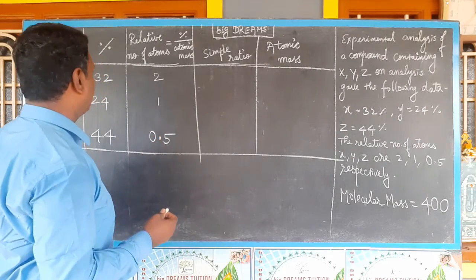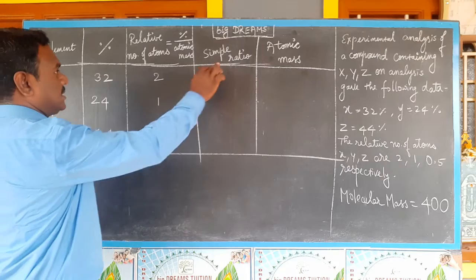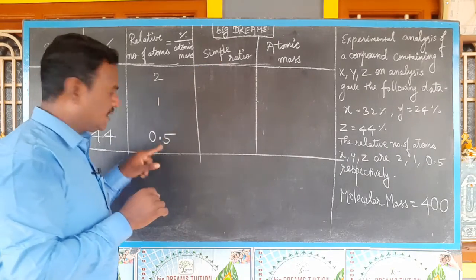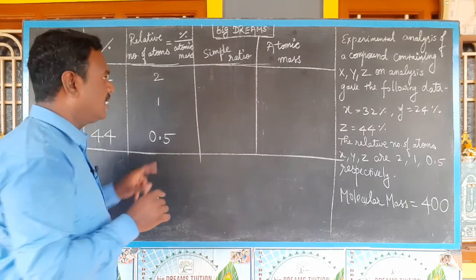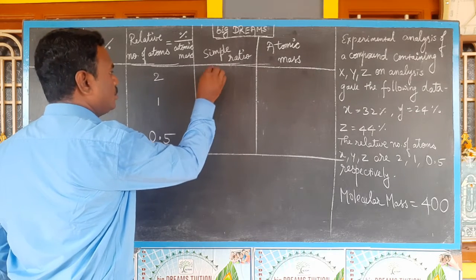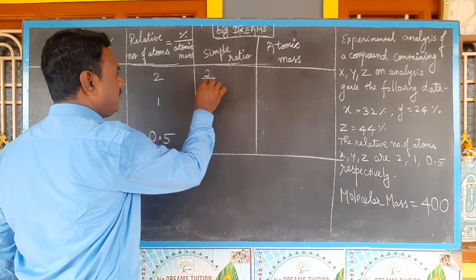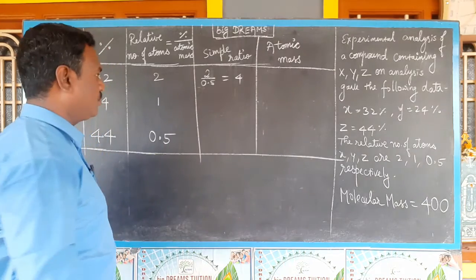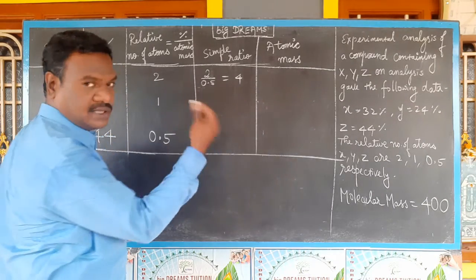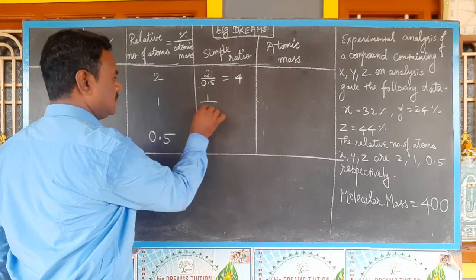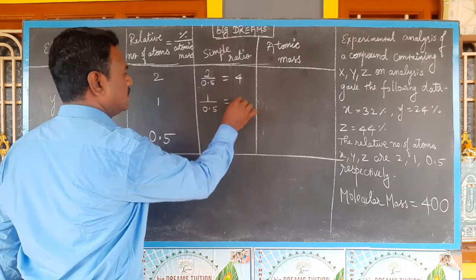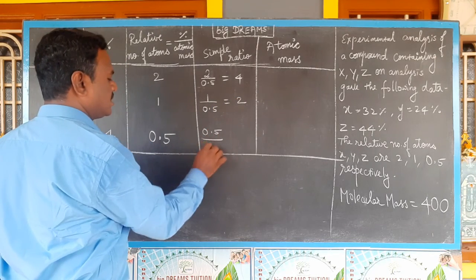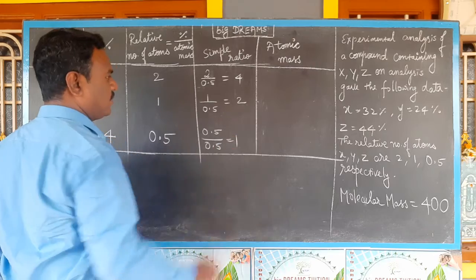The simple ratio — you can see the smallest value is 0.5. So: 2 divided by 0.5 equals 4; 1 divided by 0.5 equals 2; 0.5 divided by 0.5 equals 1.